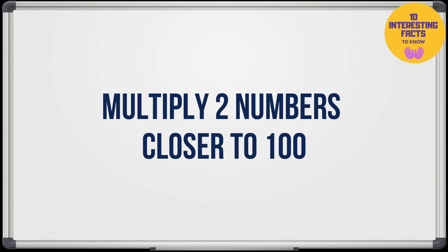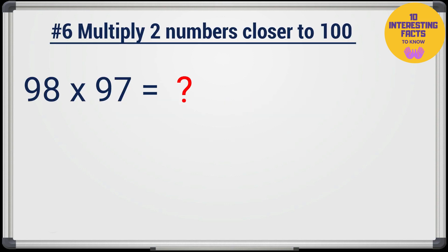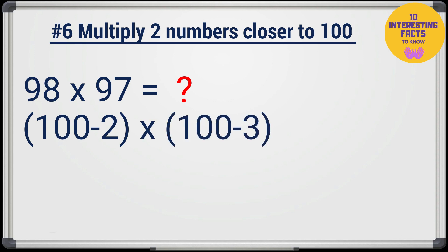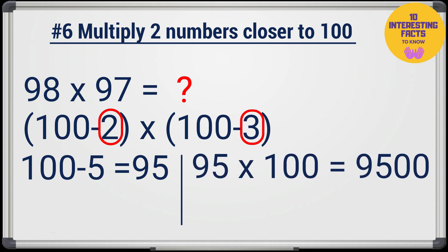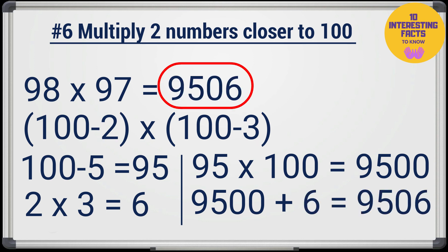Now let's learn to multiply two numbers close to 100. Let's say we need to find 98 times 97 which we can write as 100 minus 2 times 100 minus 3, right? We'll first find 100 minus 2 plus 3 which is 95 times 100 which is 9,500 and keep it aside. Now multiply 2 and 3 which is 6. Add 9,500 and 6 and the final answer is 9,506. Cool, isn't it?